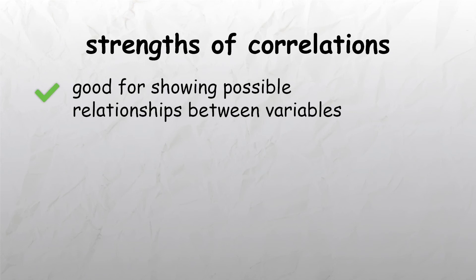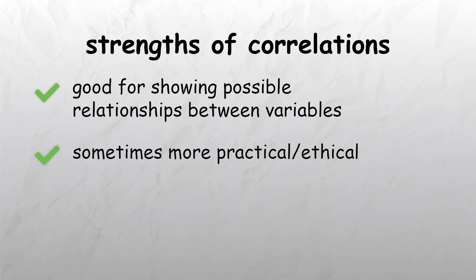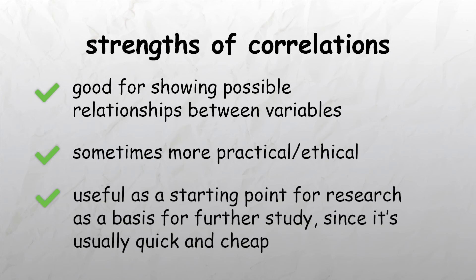Correlations are very good for showing the possible relationships between variables, and sometimes they are the only practical or ethical way of carrying out an investigation. Researchers may use correlational analysis as a starting point for their research. If a relationship between variables is found, they can then investigate this further, perhaps using experimentation to investigate if there is a causal relationship.